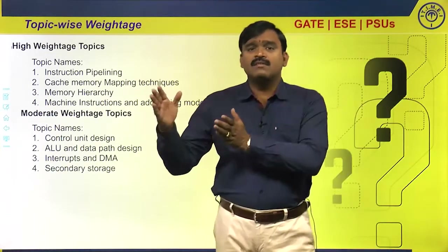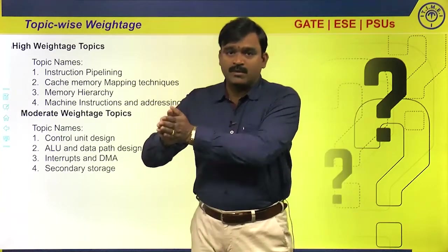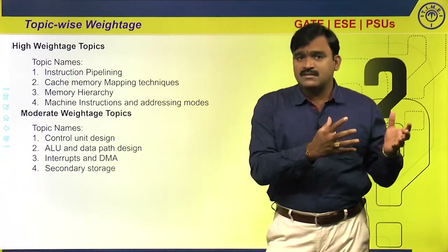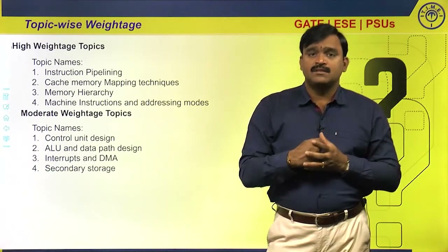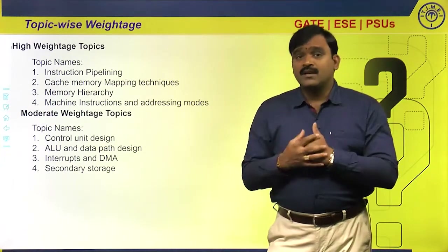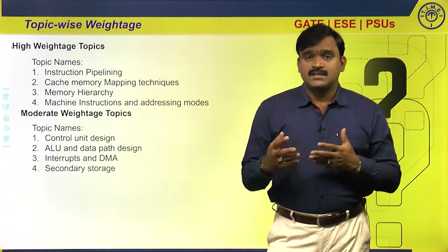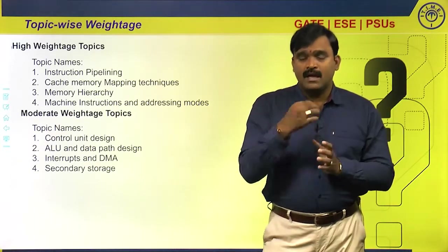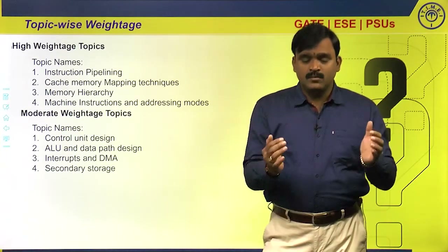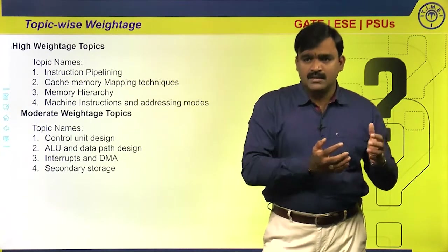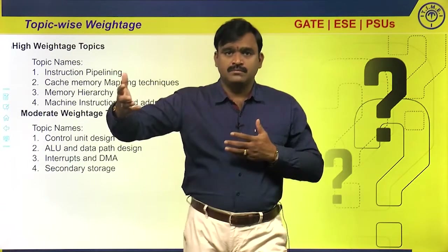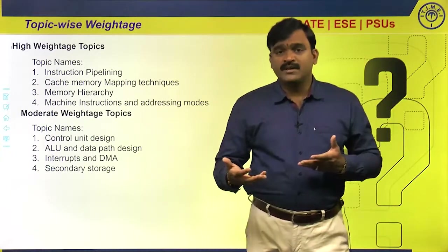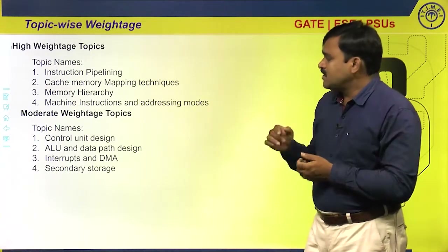For memory hierarchy, different levels of memory will be given — level one, level two, main memory, and disk. Whether a TLB is present or not, you must find the effective memory access time for fetching instructions and data. Data is stored in the data cache and instructions in the instruction cache, so access times may differ. Questions focus on hit ratio and effective memory access time across hierarchy levels.